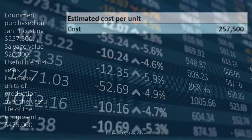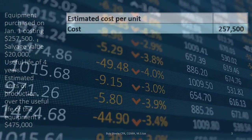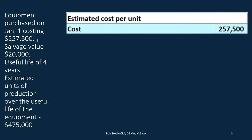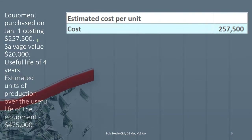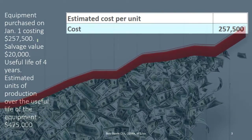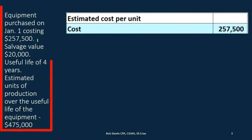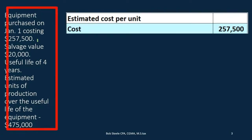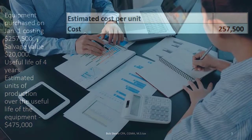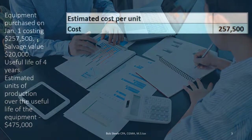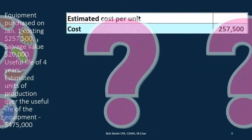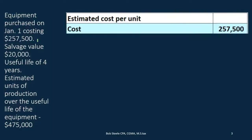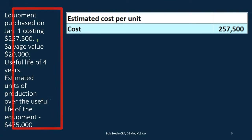For example, expensing it all at once would make net income for the year of purchase much lower, and then the next year income would be higher because that purchase expense is not included — even though we're still using the equipment. So we need to allocate the expense in a way that allows us to compare the income statement from year to year.